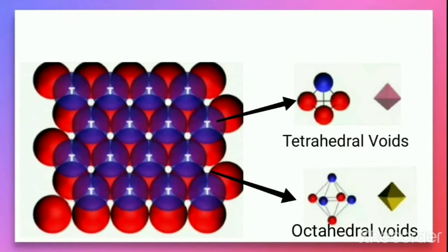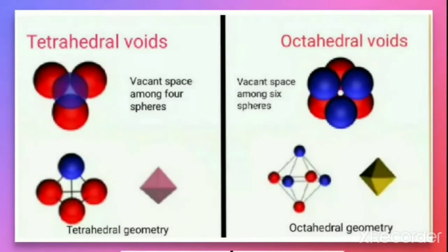Let us recall once again what tetrahedral and octahedral voids are. The vacant space among four spheres is called a tetrahedral void, and its geometry is tetrahedral geometry. The vacant space among six spheres is called an octahedral void, and its geometry is octahedral geometry.